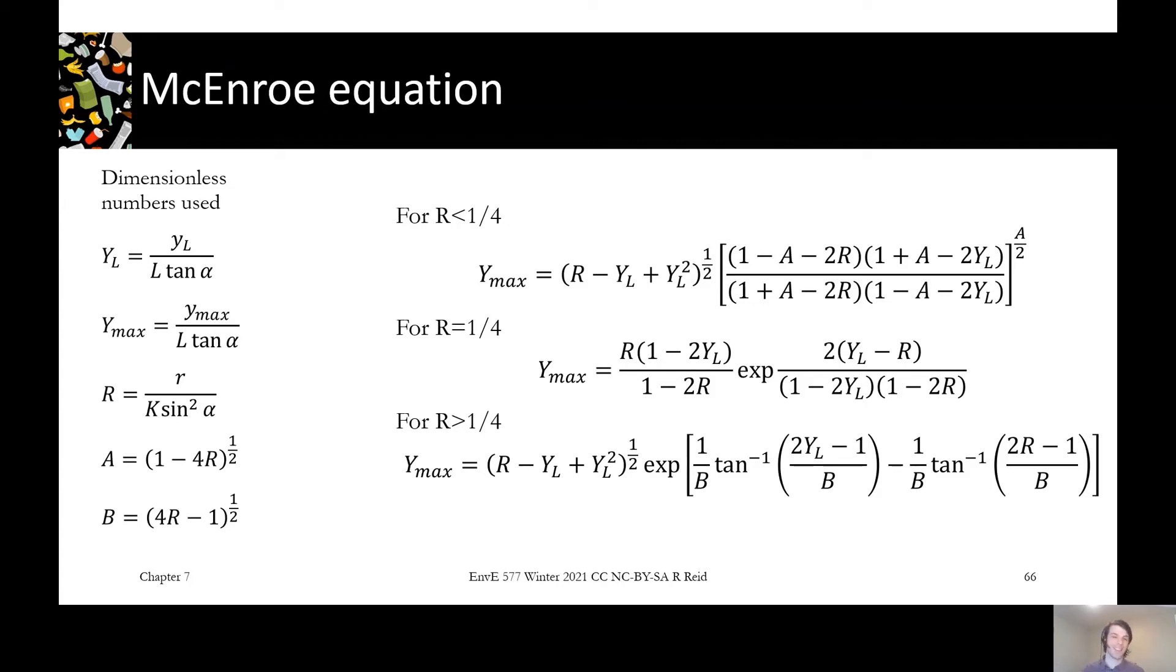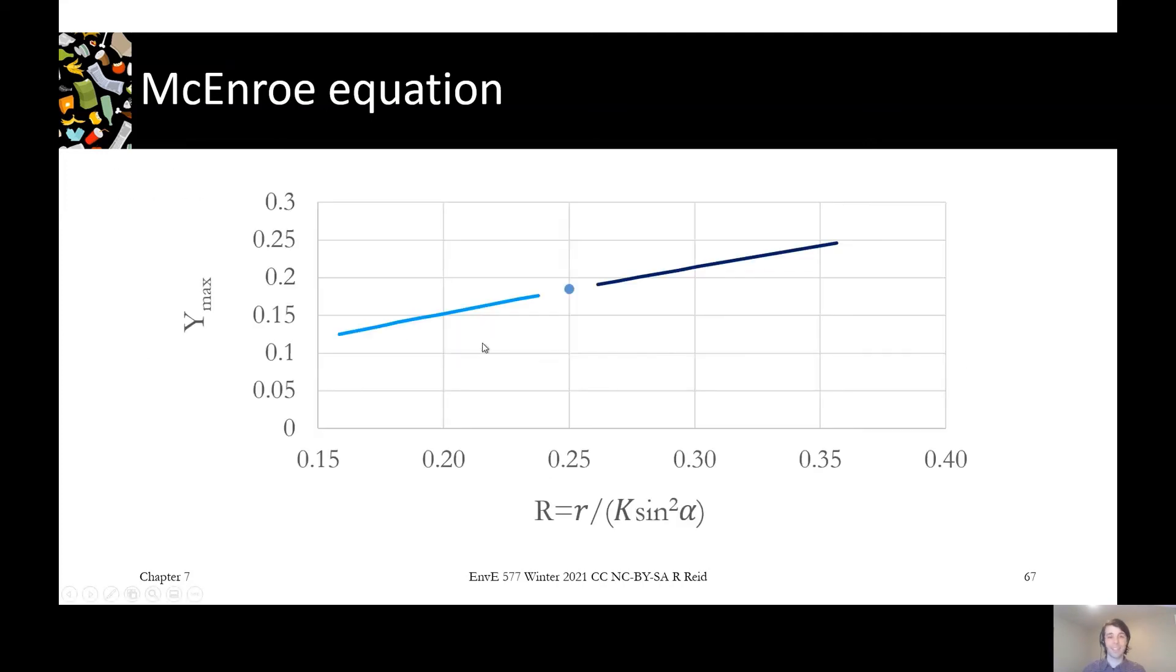This is what the output looks like. My y-axis is the maximum leachate head, and my x-axis is this dimensionless variable r. r equals the inflow rate over the hydraulic conductivity times sine squared of this slope. The more inflow, the more mounding you'll have, as well as the lower the conductivity or the lower the slope, the more mounding you'll have. The three different colors of blues show the three different functions, so you need three functions to describe it.